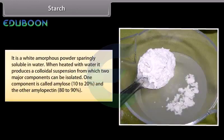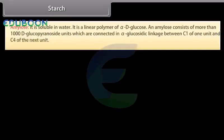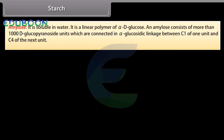Starch is a white amorphous powder, sparingly soluble in water. When heated with water, it produces a colloidal suspension from which two major components can be isolated: amylose and amylopectin. Amylose is soluble in water. It is a linear polymer of alpha-D-glucose, consisting of more than 1,000 D-glucopyranose units connected by alpha-glucosidic linkage between C1 of one unit and C4 of the next unit.